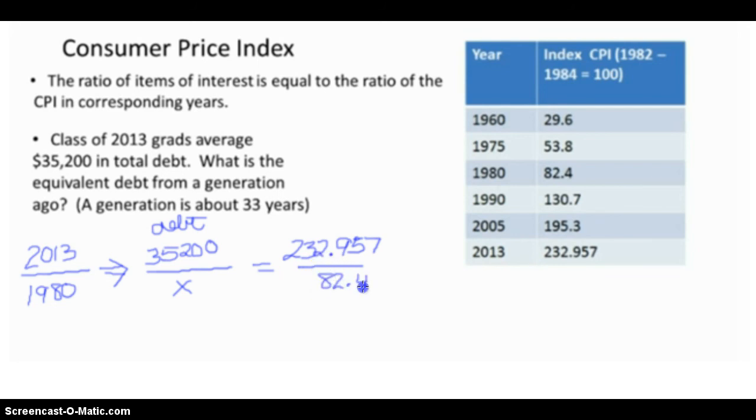So all throughout these fractions, I'm letting this first one guide me. One fraction is the items of interest, which is the debt. The other fraction is the consumer price index information.